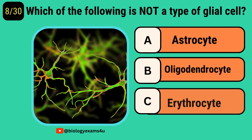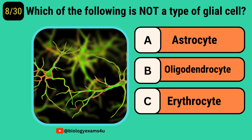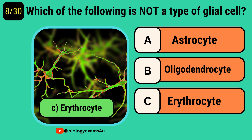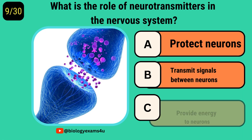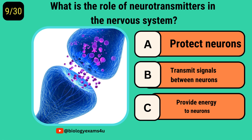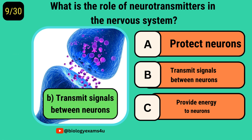Which of the following is not a type of glial cell? Erythrocyte. What is the role of neurotransmitters in the nervous system? Transmit signals between neurons.